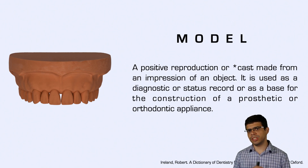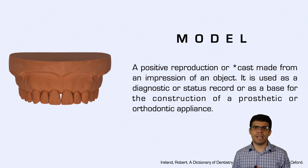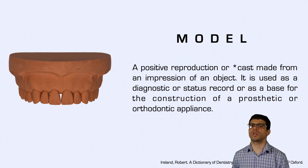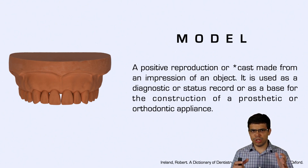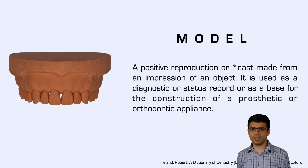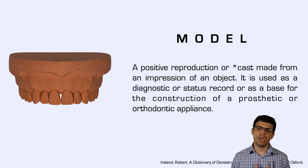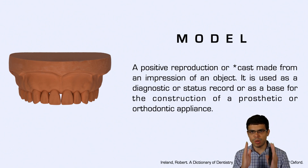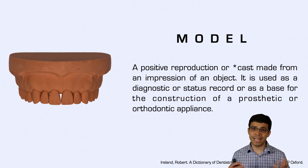One thing you need to pay attention to is the difference between three nomenclatures: model, cast, and die. A model is basically the one you use as a diagnostic study model where you're not going to produce any restorative work. If you're considering a positive reproduction to construct some prosthesis, this is the cast — it's the working model. And a die is a section of a cast. For example, if you want to make a crown, you section the crown prep and trim it so you can make a crown design and then make the casting of that alloy. That's a die.